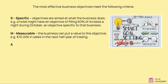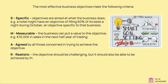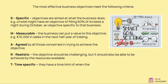A — Agreed by all those concerned in trying to achieve the objective. R — Realistic: the objective should be challenging, but it should also be able to be achieved by the resources available. T — Time specific: they have a time limit of when the objective should be achieved by.